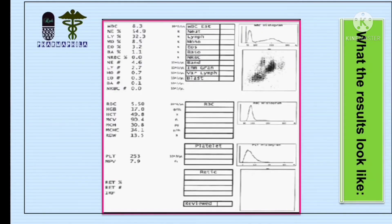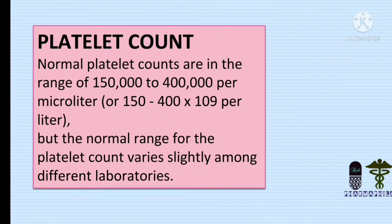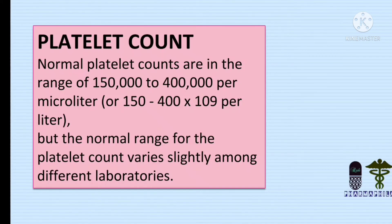This is what the result looks like when you run blood in an automatic CBC analyzer. The normal platelet count is in the range of 150,000 to 400,000 per microliter. The normal range for platelet count varies slightly among different laboratories because each laboratory has different systems, and each system may have different reference ranges.